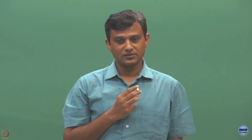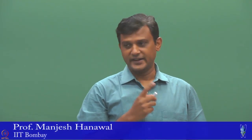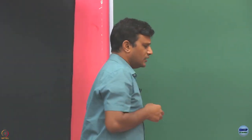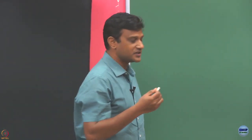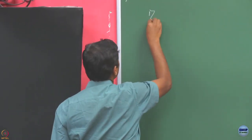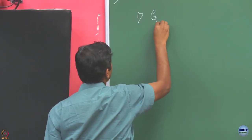Where were we last time? We completed the ETC algorithm and then we started discussing what are the other possibilities. One option we said is to do it greedily.